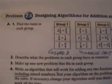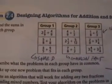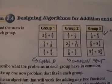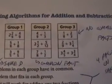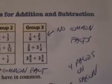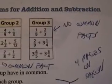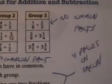Here's the designing section. This is what goes for instruction: find the sums in each group. Here's group one — they have the same denominator. Here's group two — they have different denominators. Here's group three — and these don't even have any common factors in them at all.